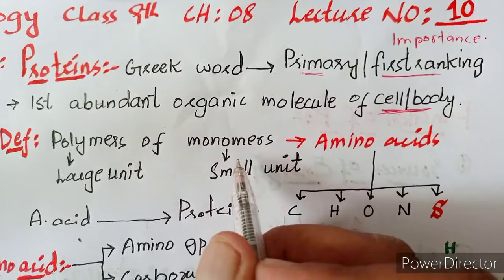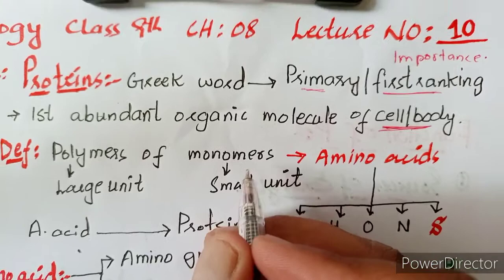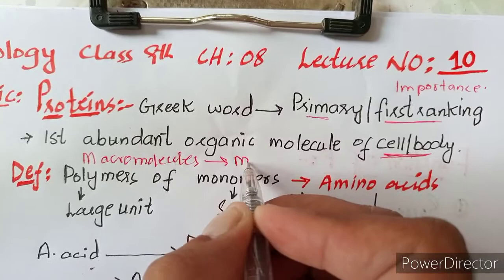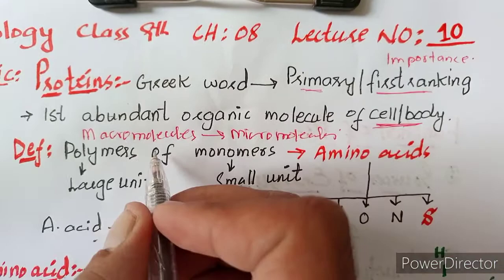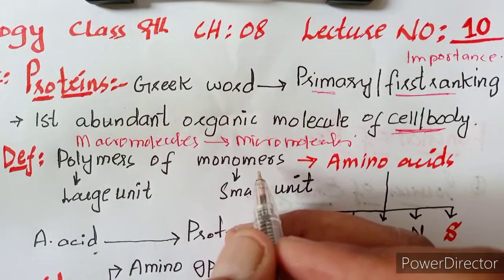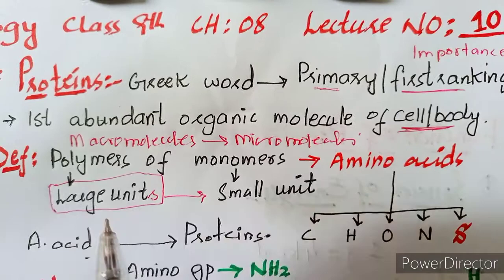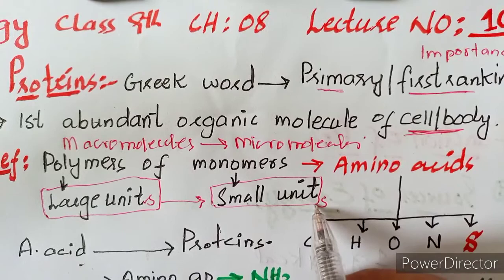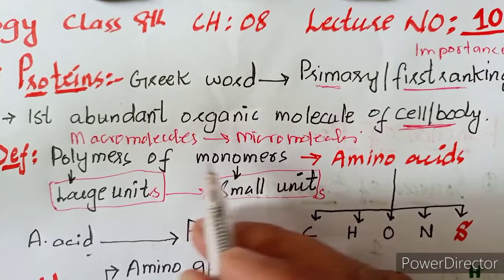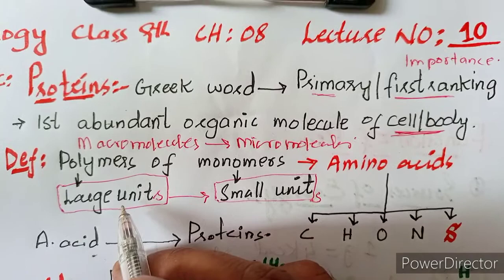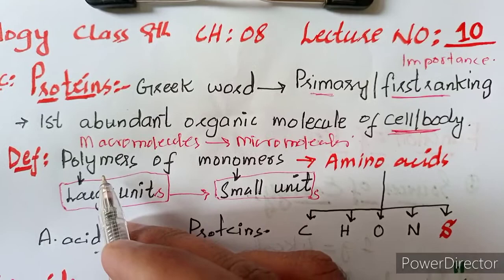Proteins are polymers — their monomers are combined together. Proteins are macromolecules. Macromolecules are large units made of small units. Polymers mean large units, and monomers mean small units. When small units combine together, they form large units, and that is how proteins are polymers.